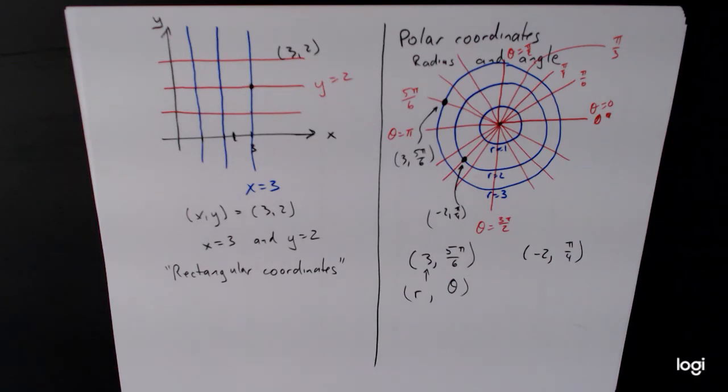And so this is just a quick introduction to how we graph, or how we plot points in polar coordinates. What we're going to do later is we're going to graph these things, or create graphs using polar coordinates by sketching a bunch of points and then playing a game of connect the dots. Much like when we started off with rectangular coordinates by plotting a bunch of points and playing connect the dots.